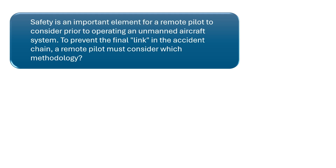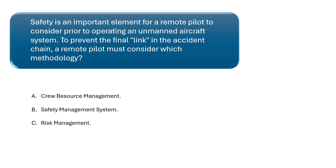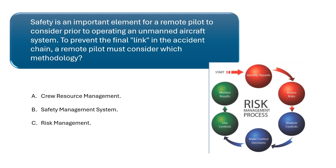Moving on to question 2. Safety is an important element for a remote pilot to consider prior to operating an unmanned aircraft system. To prevent the final link in the accident chain, a remote pilot must consider which methodology? According to the Remote Pilot Study Guide provided by the FAA, the goal of risk management is to proactively identify safety-related hazards and mitigate the associated risks. Risk management involves a six-step process that can be used to substantially decrease or even eliminate risks when flying an unmanned aircraft. The correct answer is C.